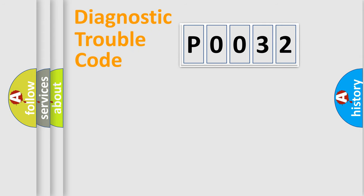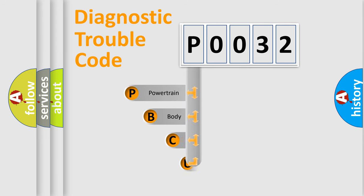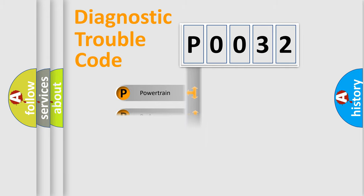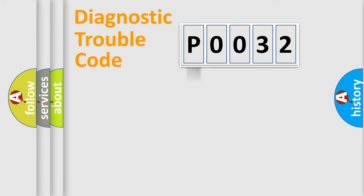Let's do this. First, let's look at the history of diagnostic fault code composition according to the OBD2 protocol, which is unified for all automakers since 2000. We divide the electric system of an automobile into four basic units: powertrain, body, chassis, and network.